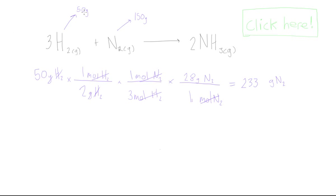Basically, we had 50 grams of hydrogen gas reacting with 150 grams of nitrogen gas to get ammonia. We wanted to find which one was the limiting reactant, and if you watched the video, we found that the 150 grams of nitrogen was in fact the limiting reactant.